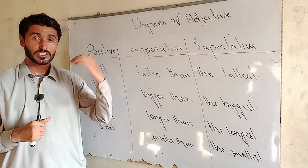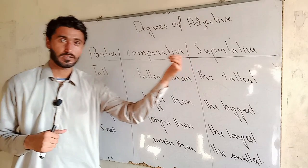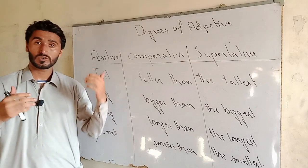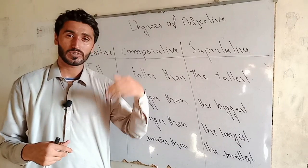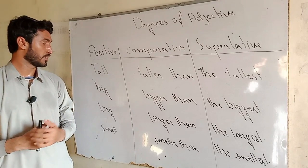Here I want to tell you about the degrees of adjectives. There are three degrees of adjectives: positive, comparative, and superlative. Positive degree is that there is no comparison. Comparative degree is where we compare two things. Superlative degree is where we compare three or more than three things.